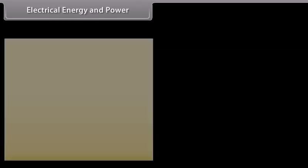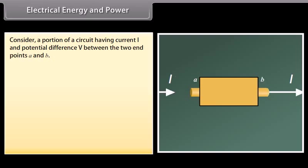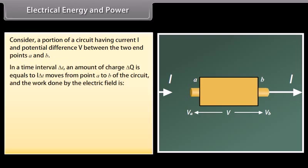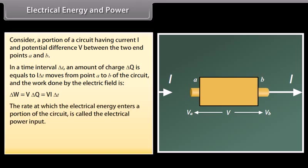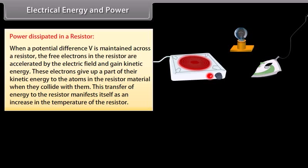Consider a portion of a circuit with current I and potential difference V between endpoints A and B. In a time interval ΔT, charge ΔQ = IΔT moves from A to B, and the work done by the electric field equals VΔQ = VIΔt. The rate at which electrical energy enters a portion of the circuit is the electrical power input: P = VI. The SI unit of power is the watt.